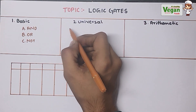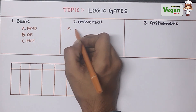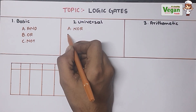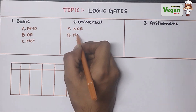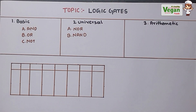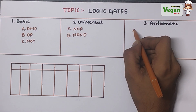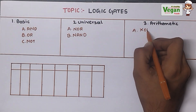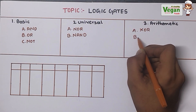In universal logic gates, we have two types: first one is NOR gate, and second one is NAND gate. In arithmetic, we also have two types: XOR gate and XNOR gate.